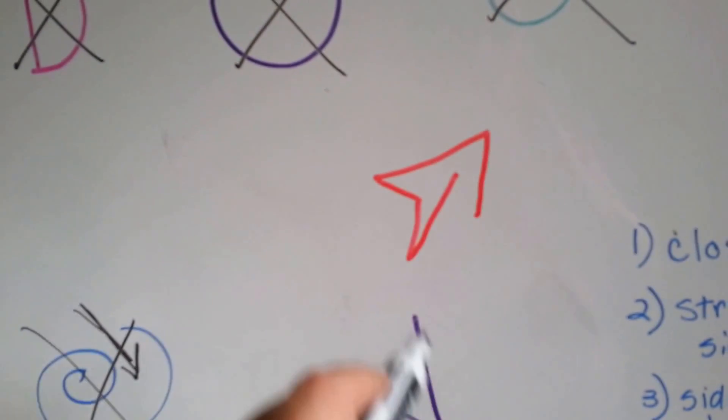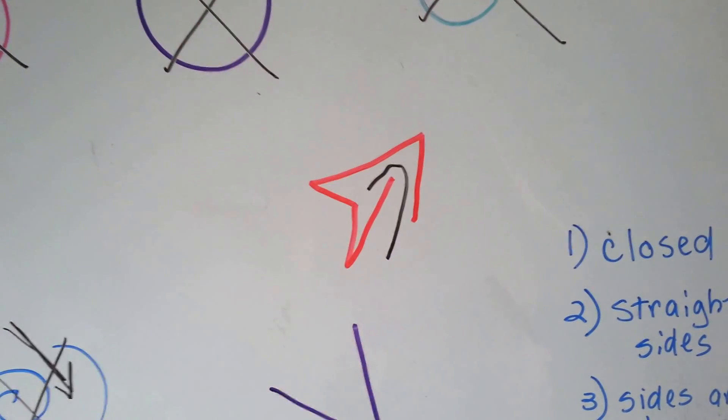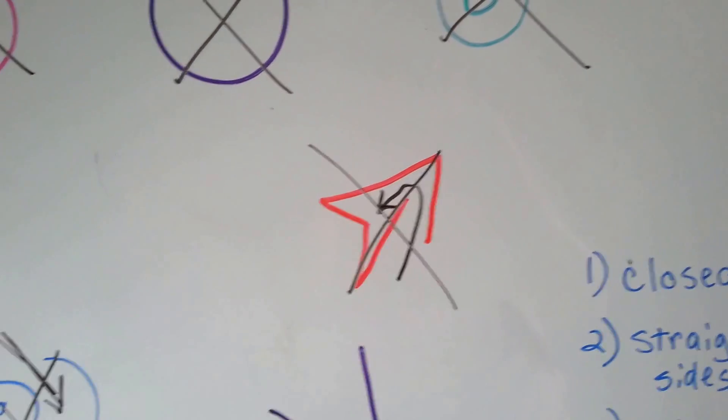Is this a polygon? Is the shape closed? No. See how you can get inside? You can get inside of that one. So that's not a polygon. It's not closed.